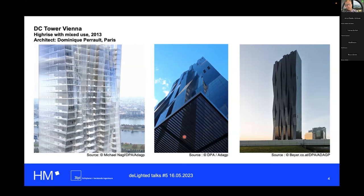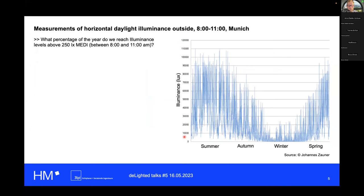We don't need dark towers — we need smart decisions about building geometry: window openings, directions, finding optimal solutions. In order to design for our non-visual pathway we need a way to evaluate a building's performance. This evaluation really hinges on a relatively simple question: what percentage of the year do we reach a certain stimulus level threshold? Let's use 250 lux melanopic EDI, because this is an established value.